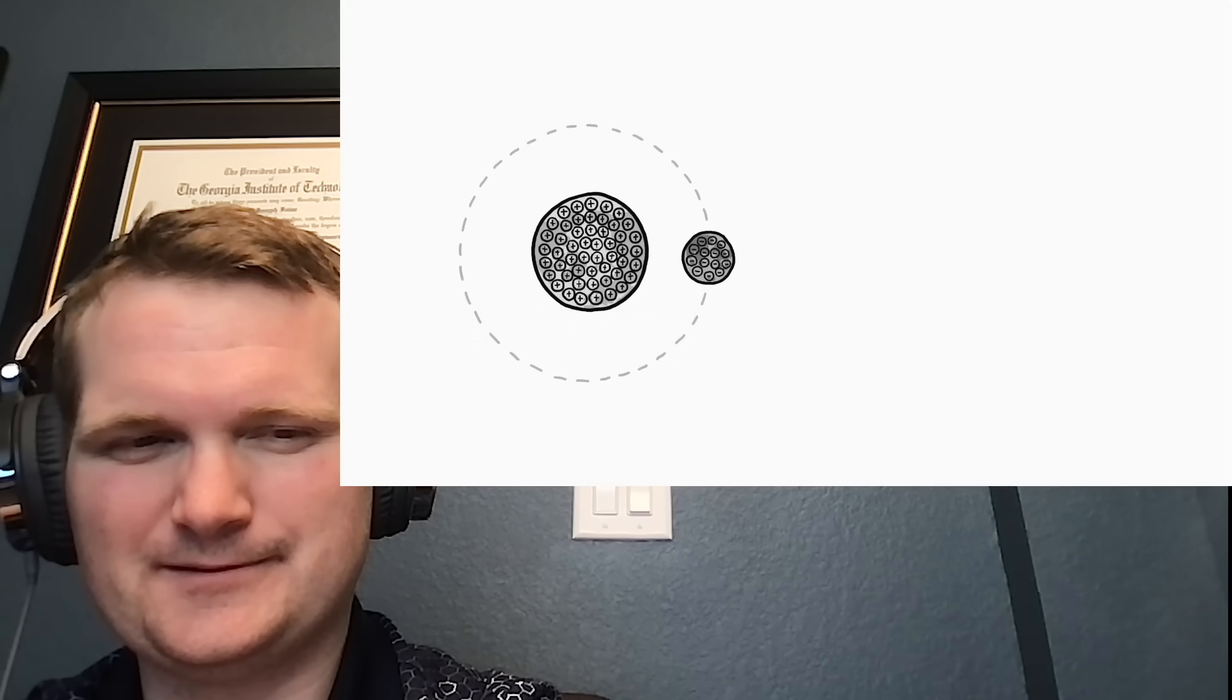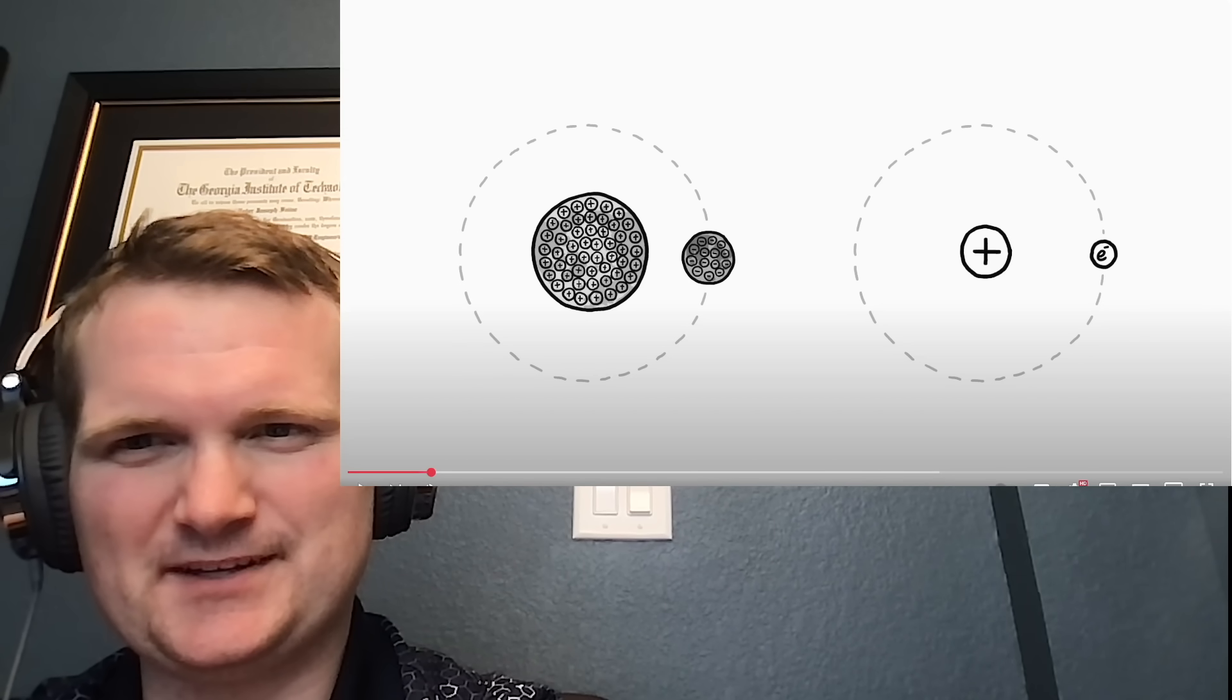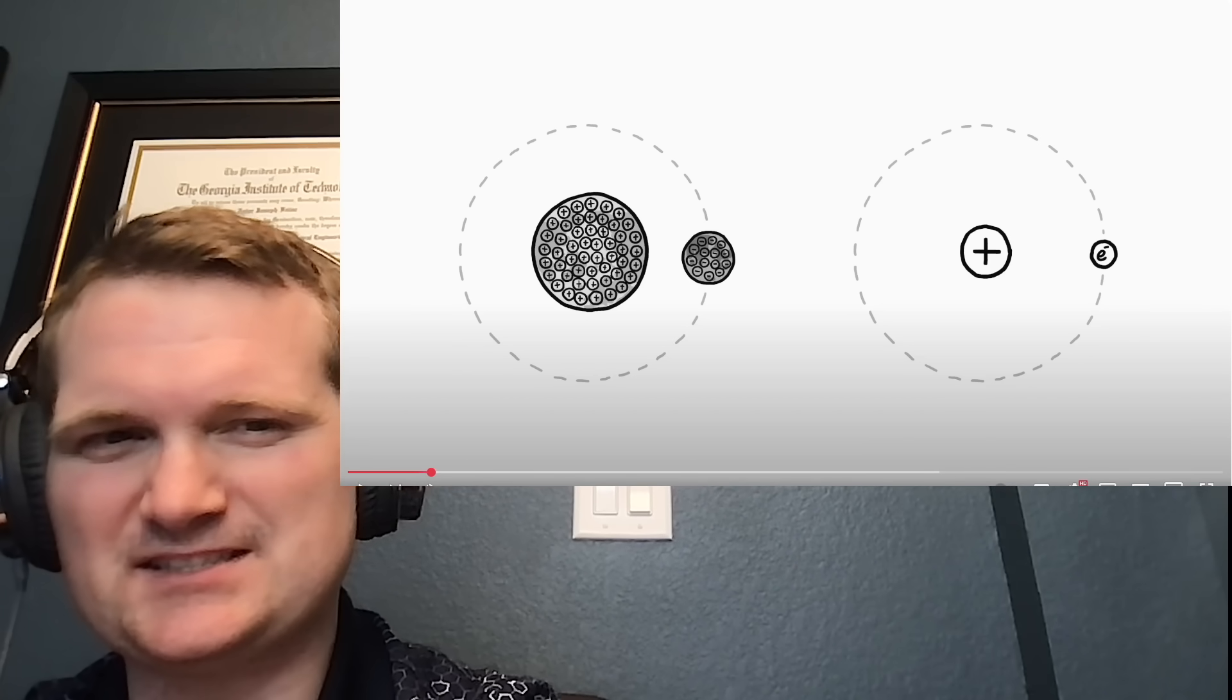You might imagine an electron moon orbiting a proton Earth, sort of like a gigantic hydrogen atom. Yeah, I see where they're going with this. It's a cute thought, but the scale doesn't work out.